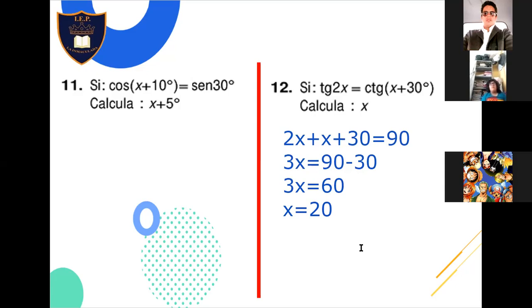Entonces, 2X más X más 30 es igual a 90. 3X, ese 30 pasa a restar, me da 60. Ese 3 que está multiplicando pasa a dividir a 60. Con lo que X pasa a ser 20. Tenemos el valor de X, lo que nos están pidiendo. Y encerramos nuestra respuesta simplemente para resaltar que esa es la respuesta.